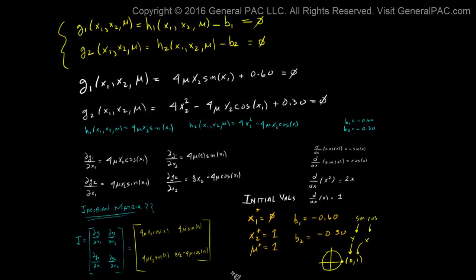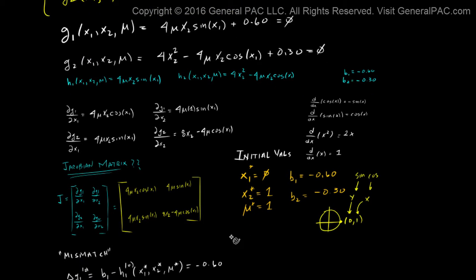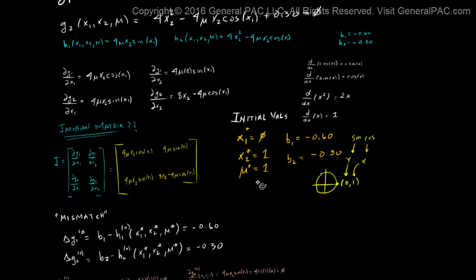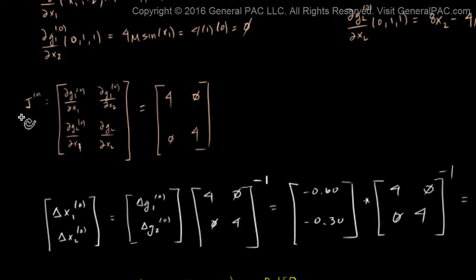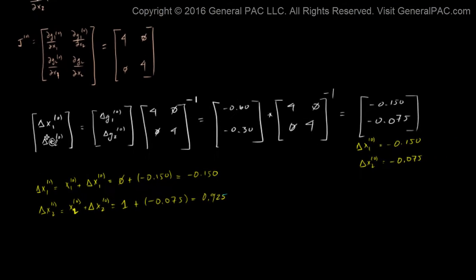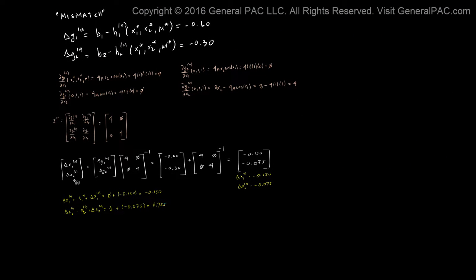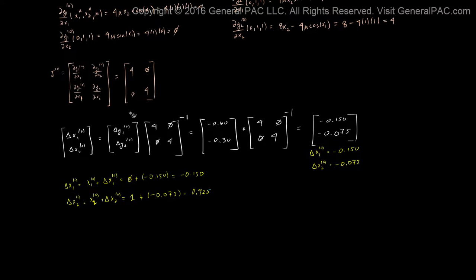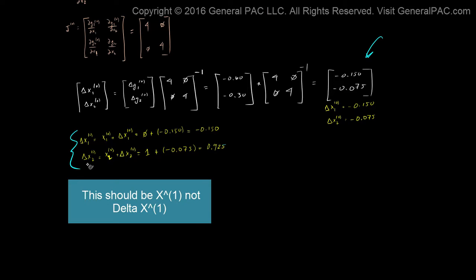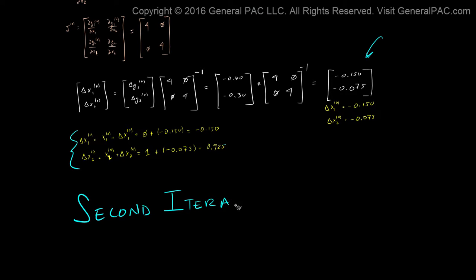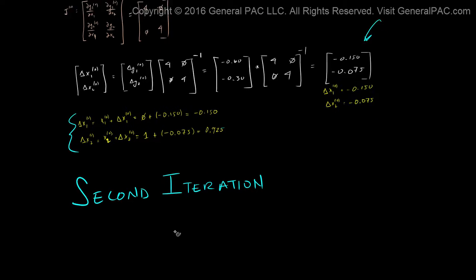In the previous parts we built up our case, introduced the formulas, introduced the Jacobian matrix, and plugged in initial values to determine the mismatch. We also plugged in initial values to determine the Jacobian matrix, then calculated delta x1 and delta x2 for the zeroth iteration by inverting the Jacobian matrix. We then calculated the values for the second iteration — delta x1 and delta x2. So now in this part we will go over the second iteration to solidify this example.